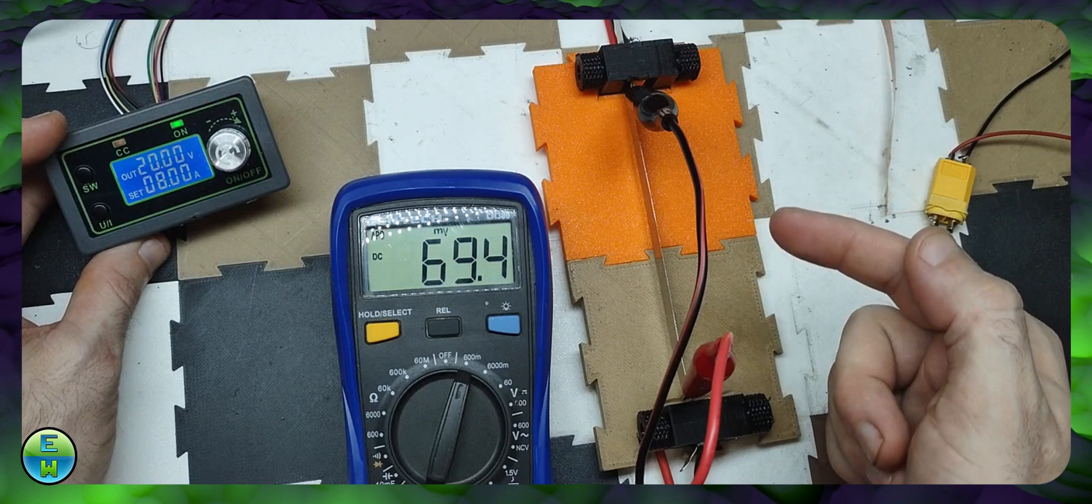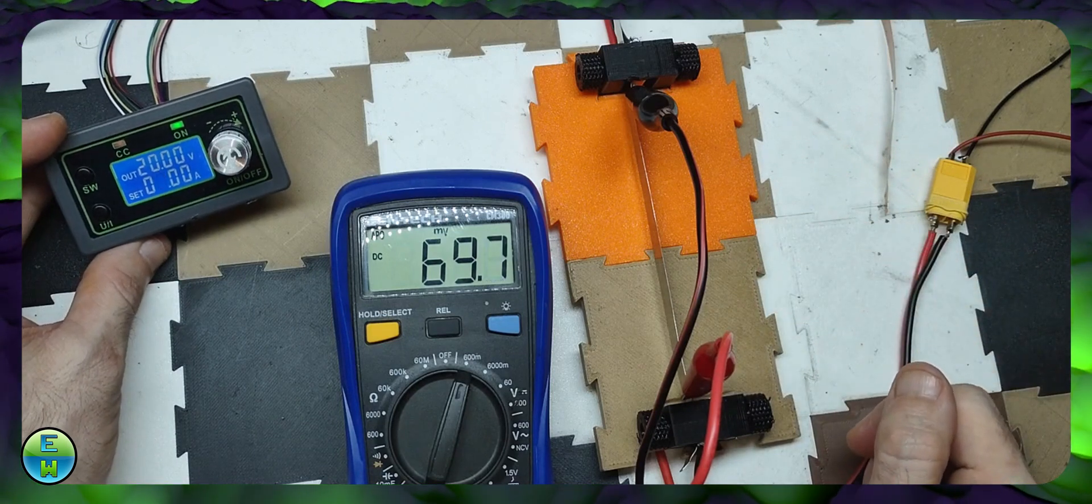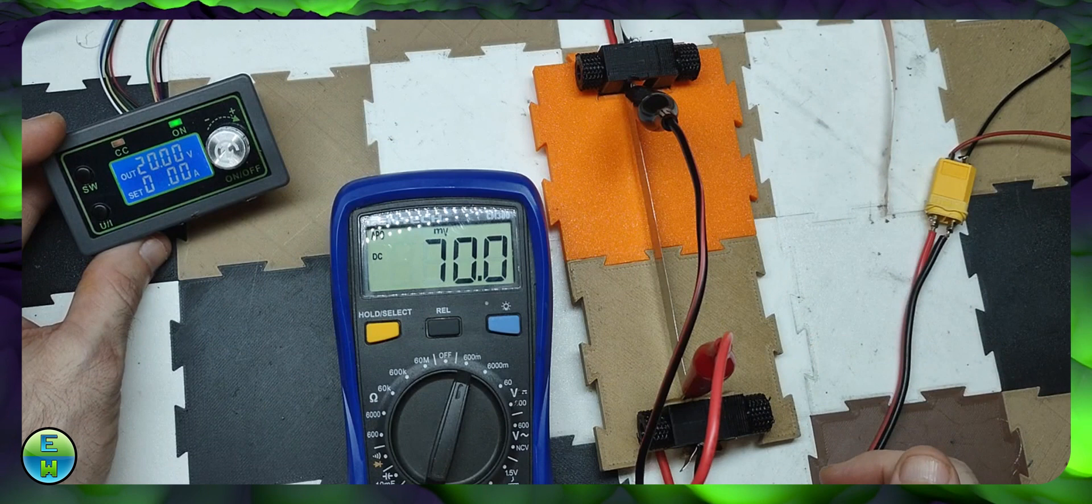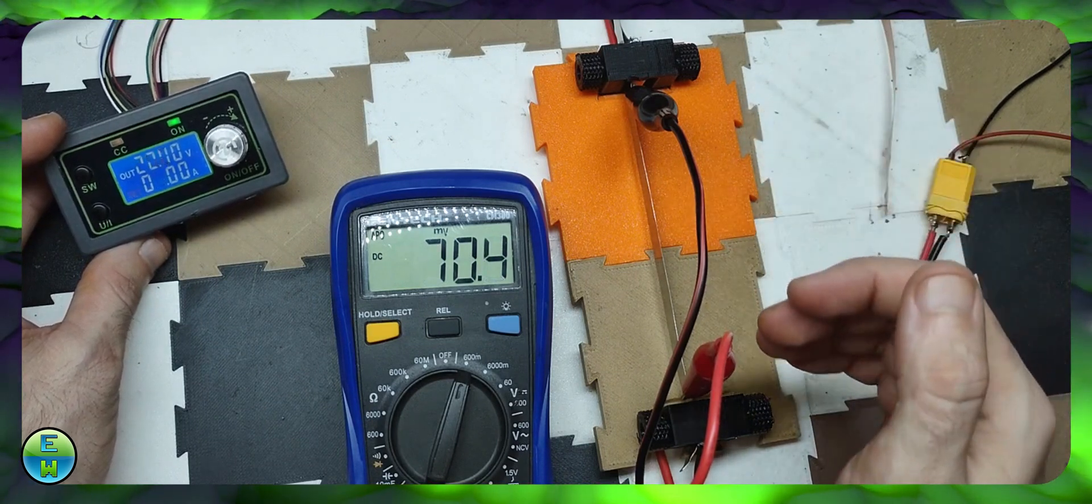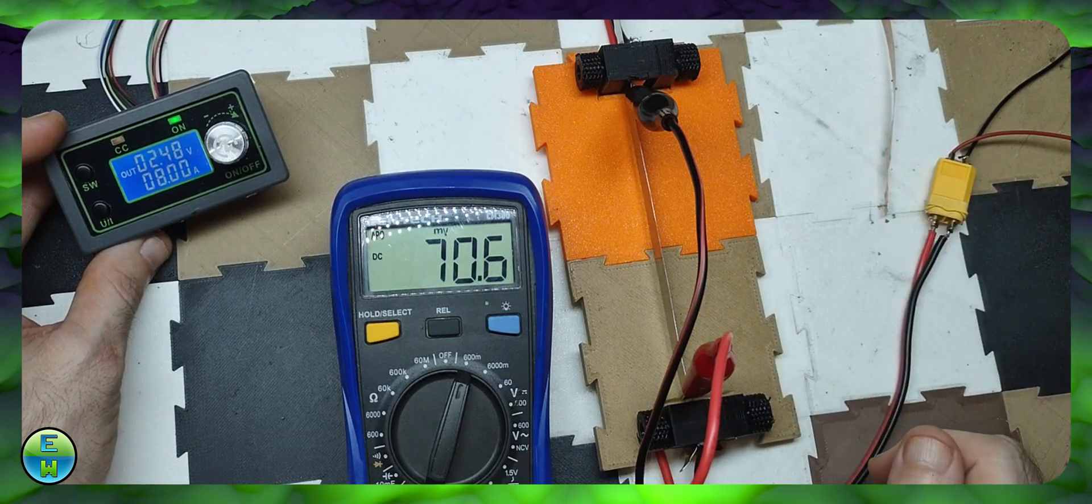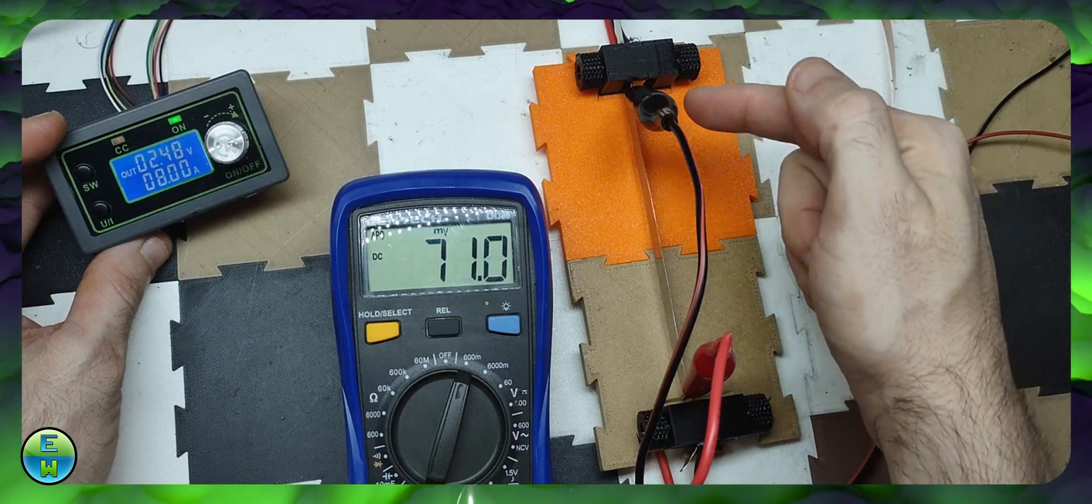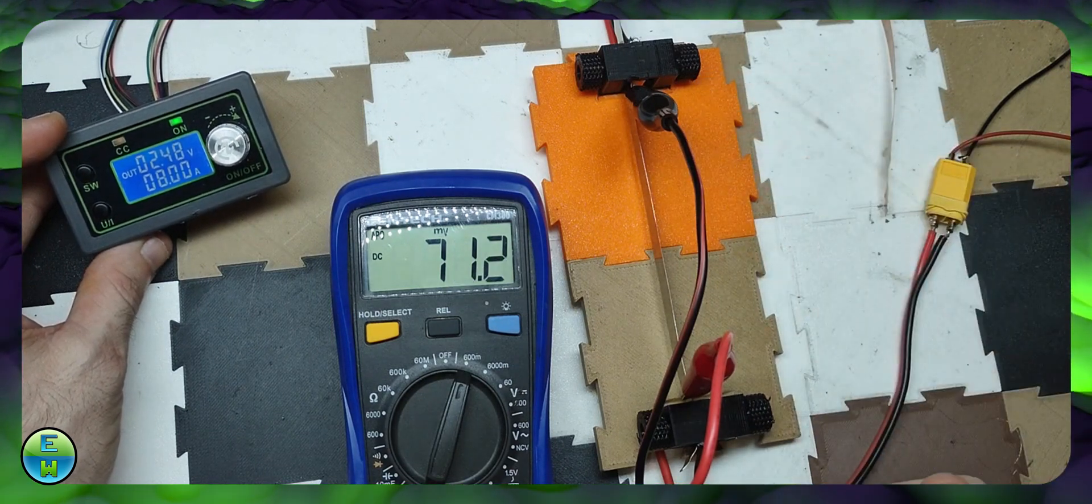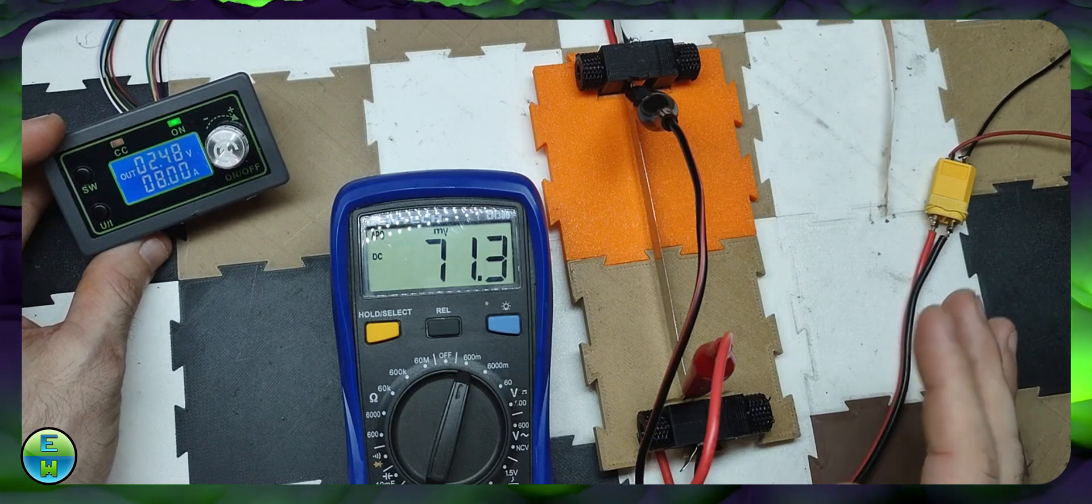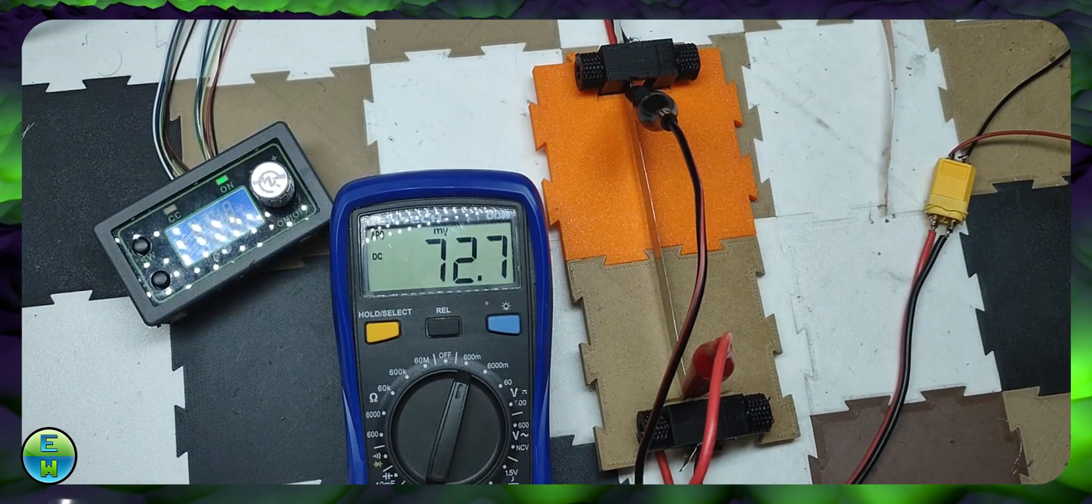The reason why it's slowly increasing right now is because we're putting 8 amps through this tiny nickel strip and it's heating up. For most things, as they heat up, their resistance increases. When that happens, it increases the voltage drop across it. It will eventually stabilize or catch on fire. So we're just going to wait and see what happens.